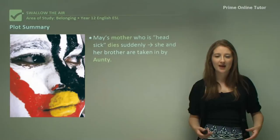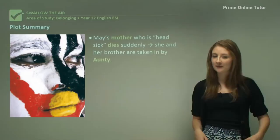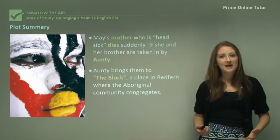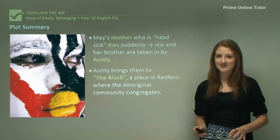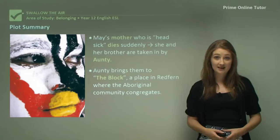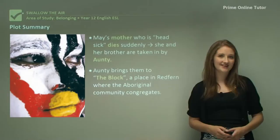May and her brother Billy are taken in by a figure called Aunty, taken from their dead mother and brought in by this friendly, well-meaning aunt figure. Aunty brings them to the Block, which becomes the central setting of the story. The Block is a place in Redfern where the Aboriginal community congregates, and we're going to look at what that means for Aboriginal identity later in this video.